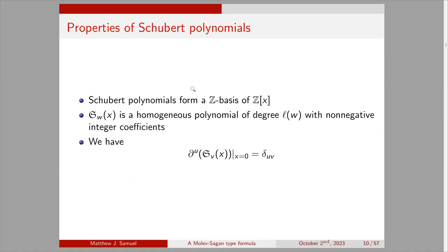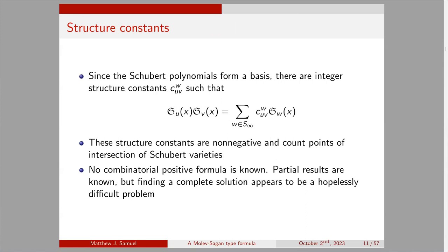Some properties of Schubert polynomials: they form a Z-basis of the polynomial ring. S_u(x) is a homogeneous polynomial of degree L(w) with non-negative integer coefficients. We have the formula: ∂_u applied to S_v(x) evaluated at x=0 gives 1 if u=v and 0 otherwise. Since they form a basis, we can define structure constants c_{u,v}^w by writing S_u(x)·S_v(x) = Σ c_{u,v}^w S_w(x). These structure constants are known to be non-negative and count points of intersection of Schubert varieties, but no combinatorial positive formula is currently known.